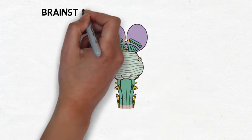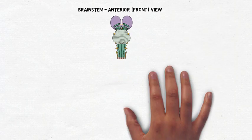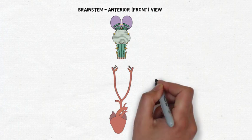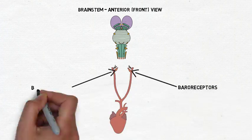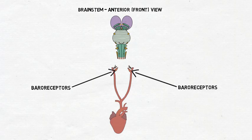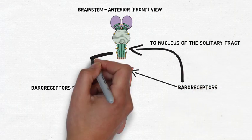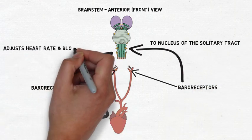Perhaps the most important action linked to the medulla is the regulation of cardiovascular and respiratory functions. The medulla gets information about changes in blood pressure from baroreceptors, which are found inside blood vessels. This information is sent to the nucleus of the solitary tract in the medulla, which initiates reflexive actions to return blood pressure to a desired range.